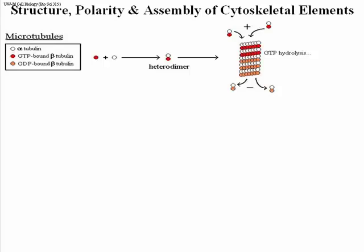Microtubules have polarity: a plus end and a minus end. The plus end is the end at which the heterodimers come together to make a microtubule. The minus end is where the microtubule might come apart — where the heterodimers come off. You'll notice a difference in color between the heterodimers that are adding to the microtubule and those that are coming off.